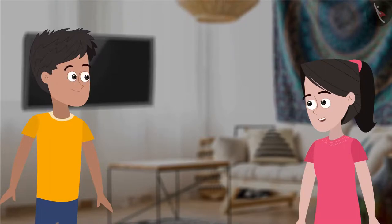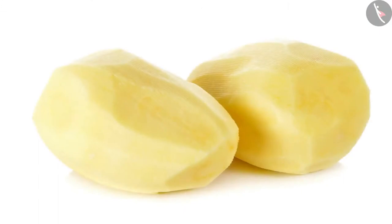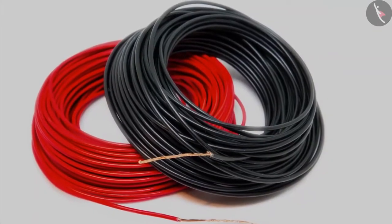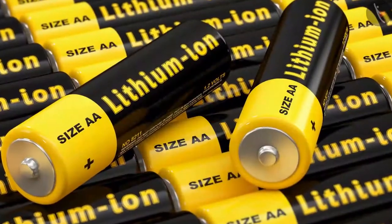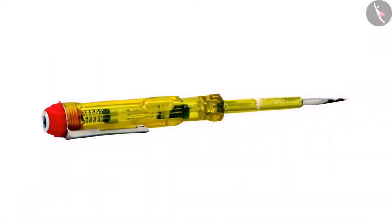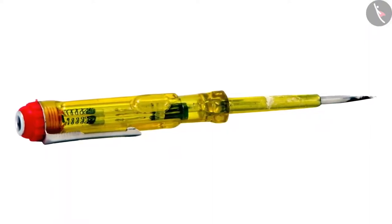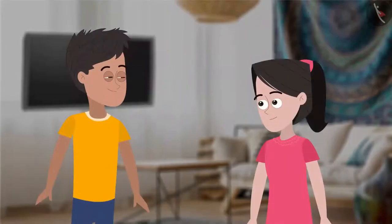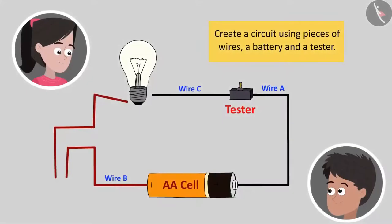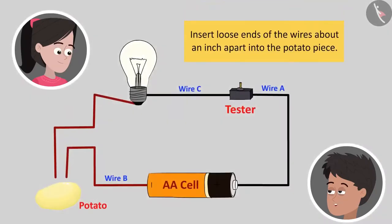Yes, of course, Bhaiya. Let me get a piece of potato while you get three pieces of wires, an AA cell and the electrical tester that we had used in our previous activity. Here you go, Bhaiya. Everything is here. Okay, now first create a similar circuit like we had done earlier. Connect the wires with battery and the tester. Done.